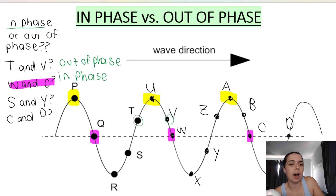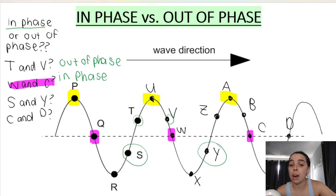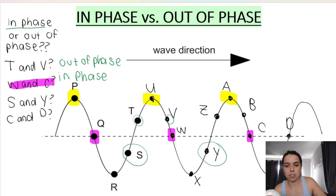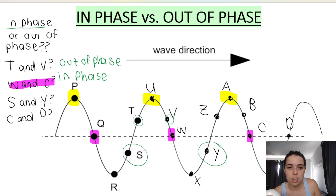S and Y — here's S and here's Y. Are they in phase or out of phase? S is just below the equilibrium position going up towards the crest. Y is also just below the equilibrium position going up towards the next crest. So yes, S and Y are in phase.